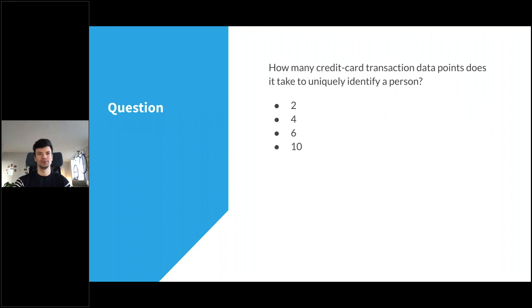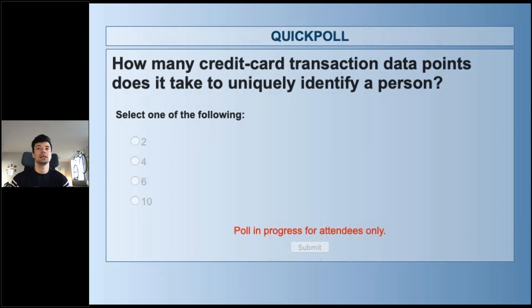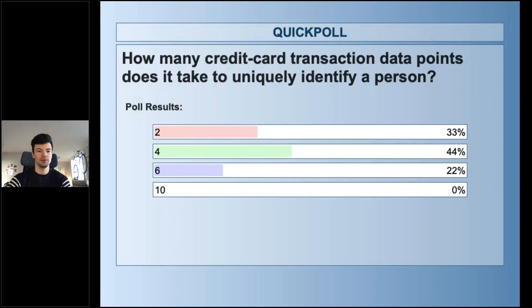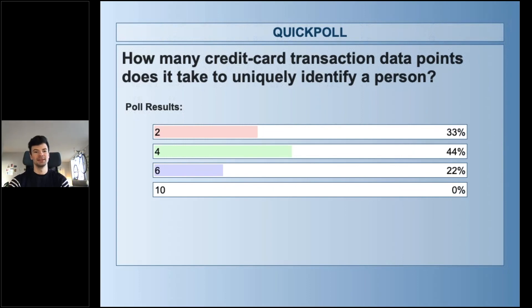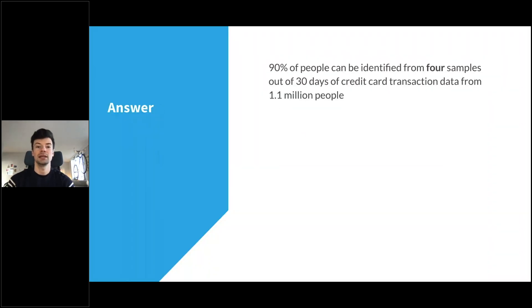Now time for a live poll. The question is: how many credit card transaction data points does it take to uniquely identify a person? Most of you got it right — it is four. 90% of people can actually be identified from just four samples out of 30 days of credit card transaction data from 1.1 million people. All of this transaction data provides amounts and addresses of locations where purchases were made. That's pretty crazy.